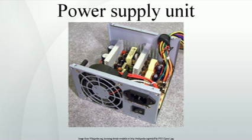The desktop computer power supply changes alternating current from a wall socket to low-voltage direct current to operate the processor and peripheral devices. Several direct current voltages are required, and they must be regulated with some accuracy to provide stable operation of the computer.